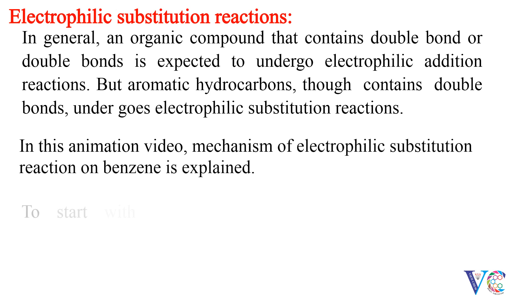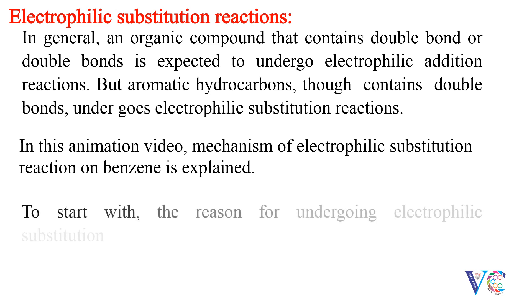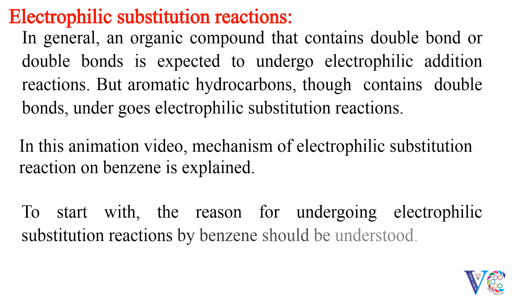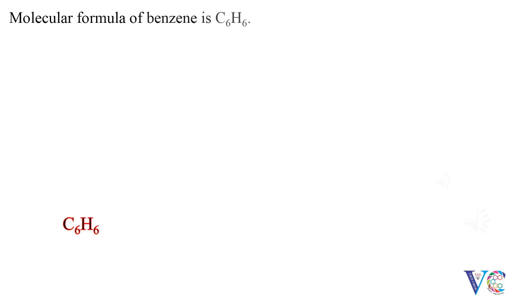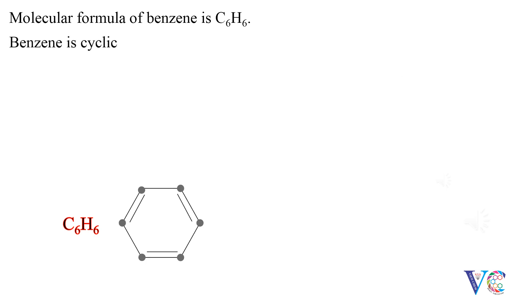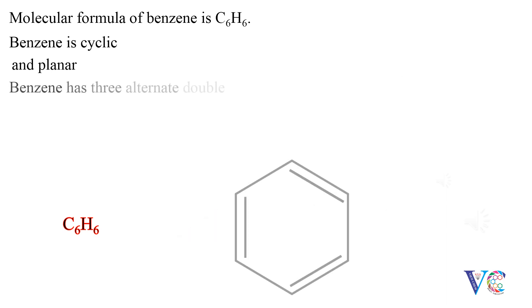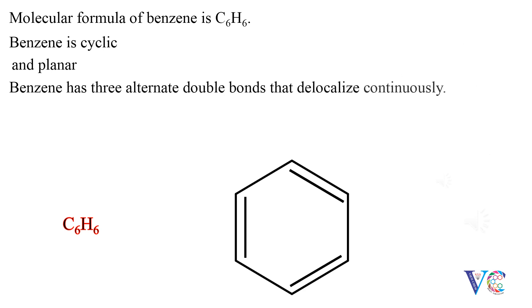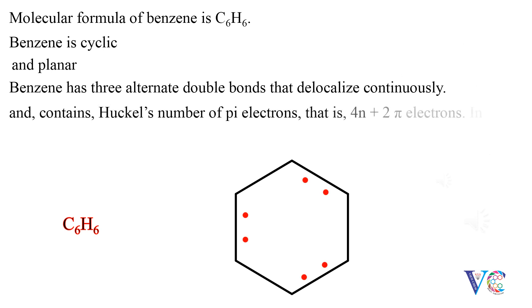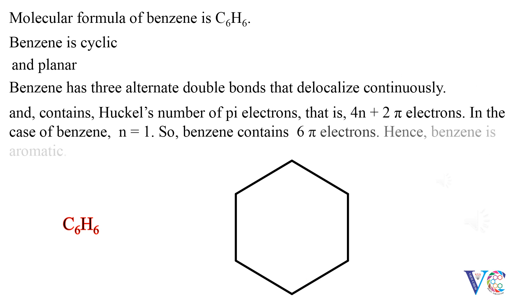To start with, the reason for undergoing electrophilic substitution reactions by benzene should be understood. The molecular formula of benzene is C6H6. Benzene is cyclic and planar. Benzene has three alternate double bonds that delocalize continuously, and contains Huckel's number of pi electrons, that is, 4n+2 pi electrons. In the case of benzene, n equals 1, so benzene contains 6 pi electrons. Hence, benzene is aromatic.